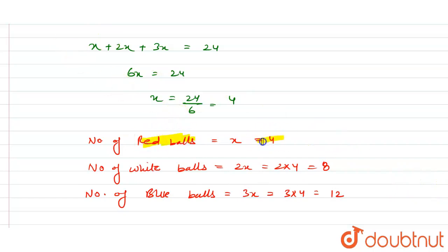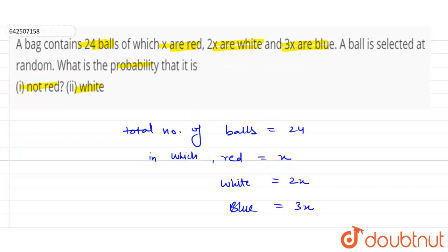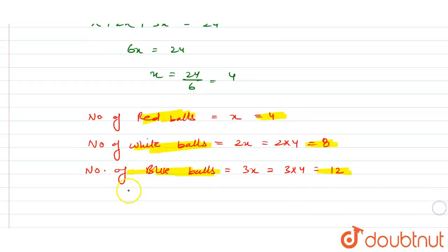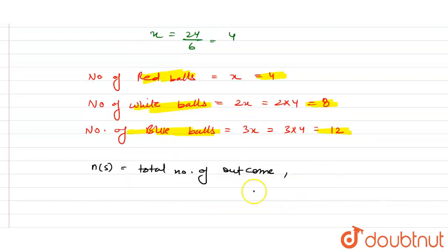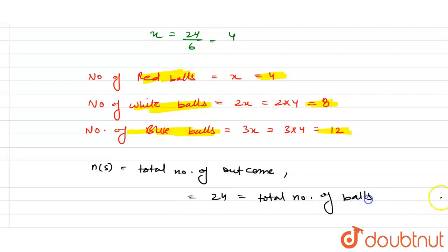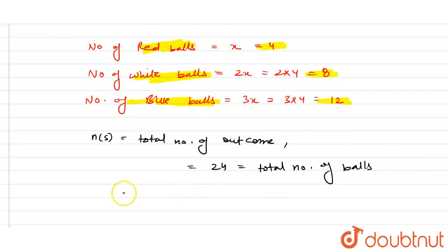So red balls are 4, white balls are 8, and blue balls are 12. The first question asks: what is the probability that the selected ball is not red? Let n(S) be the total number of outcomes, which equals 24, the total number of balls.